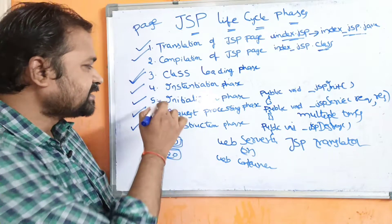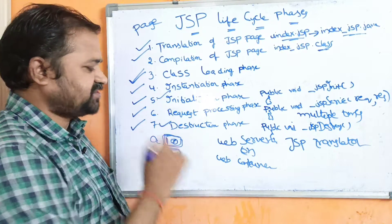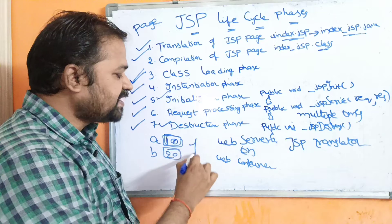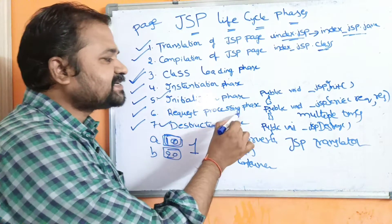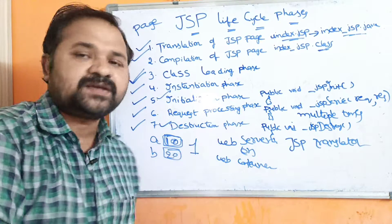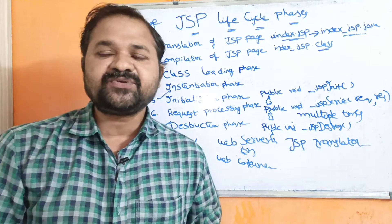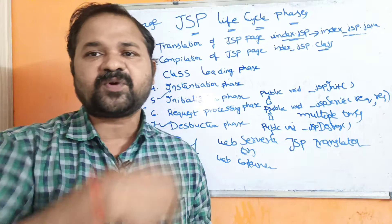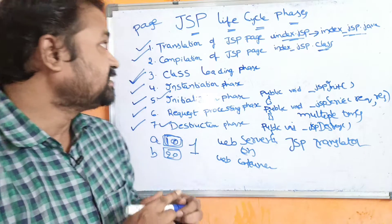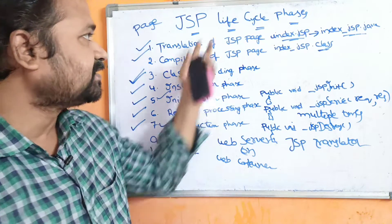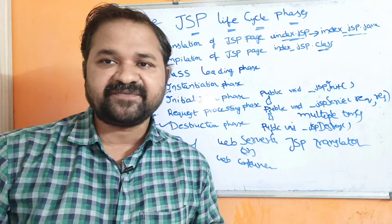The key point is that the initialization and destruction phases are executed only once, whereas the request processing phase is executed multiple times depending on the number of client requests. This is about the phases of the JSP Lifecycle.